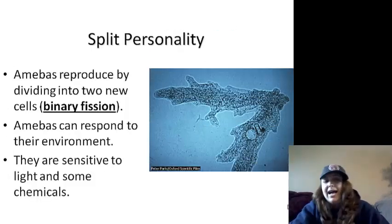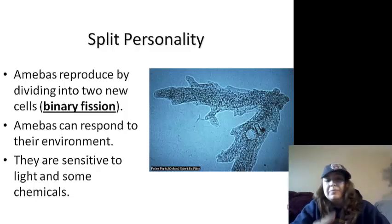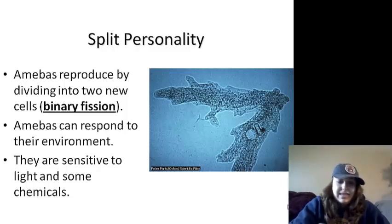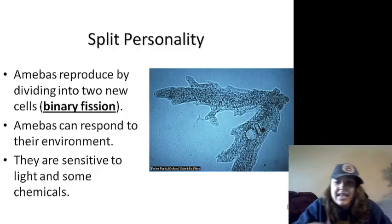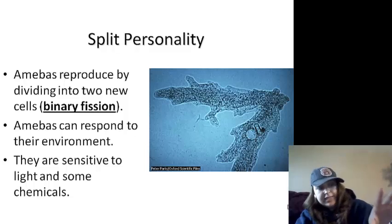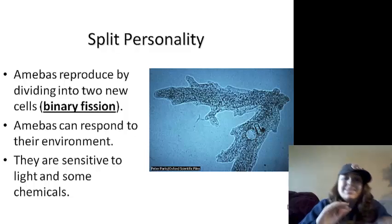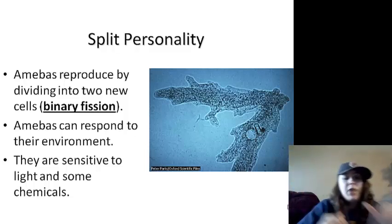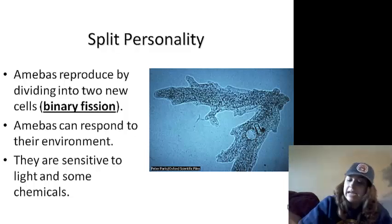Amoebas have a split personality — they split by binary fission. Amoebas do respond to their environment; they can move towards or away from things. Movement is known as taxis. There are two types: they are light-sensitive, so that's phototaxis — moving towards or away from the light. They can also respond to chemicals, which is known as chemotaxis — moving towards or away from a chemical.